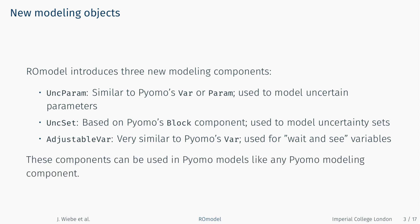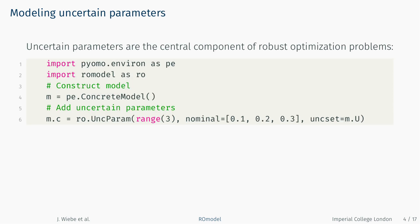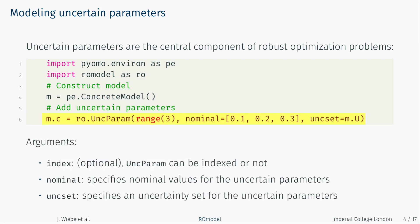In combination, these three components are sufficient for modeling a large number of robust optimization problems. They can be used like any PyOMO modeling component in combination with PyOMO's other components. Uncertain parameters are defined in analogy to PyOMO's variables or parameters. The component has three arguments: an optional index for constructing a vector of uncertain parameters, an argument specifying nominal values as a list, and a third argument specifying the uncertainty set.